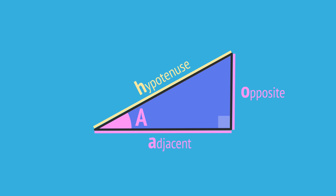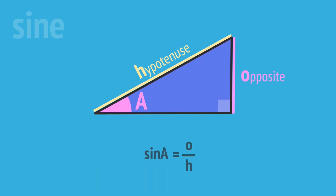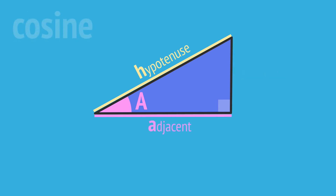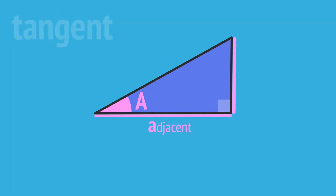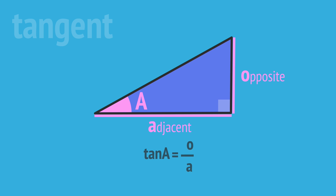We then define ratios using different pairs of sides. The sine ratio is the opposite divided by the hypotenuse, which we remember using SOH. The cosine ratio is the adjacent divided by the hypotenuse, which we remember using CAH. And the tangent ratio is the opposite divided by the adjacent, which we remember using TOA.